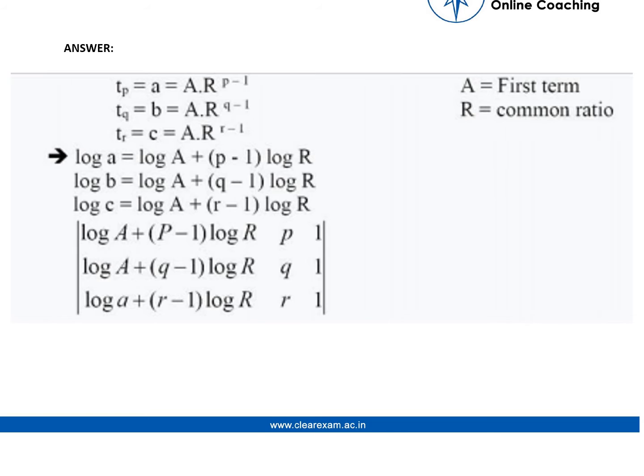As a is the pth term, it can be written as capital A (that is first term of the GP) times capital R (that is the common ratio of GP) raised to the power of p minus 1. Similarly, if b is the qth term, it can be written as A*R^(q-1), and if c is the rth term, it can be written as A*R^(r-1).